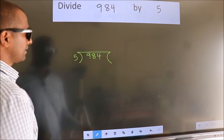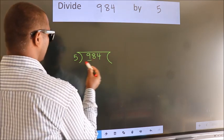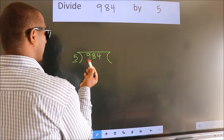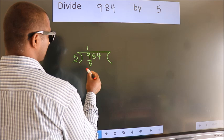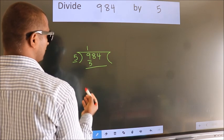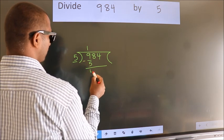Next, here we have 9, here 5. A number close to 9 in the 5 table is 5 once is 5. Now we should subtract. We get 4.